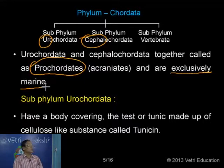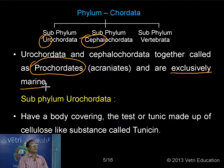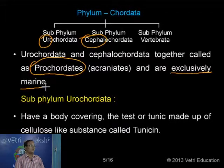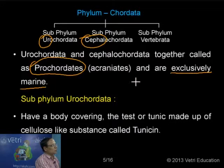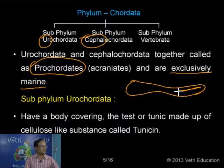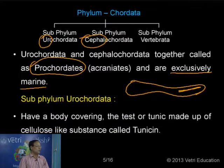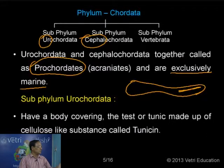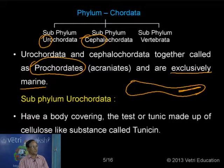The first subphylum is Urochordata. 'Uro' means tail. In the case of these animals, the notochord is present in the tail region, but not in the adult animal - it is formed only in the larva. There is a larva also called a tadpole larva. The notochord is found only in the tail region of the larva, but absent in the adult. That is why the name is given as Urochordata.